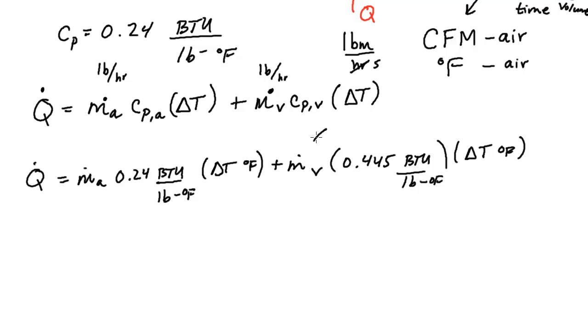Now an important thing is that we typically don't want to have to deal with two mass flow rates. So what we do is we take advantage, we say we have to make an assumption here. Under typical AC processes, we know that this ratio between the flow rate of vapor and the mass flow rate of air, we know that that ratio is around 0.01. And so what we can do is we can replace this M dot V with 0.01 times M dot of the air.